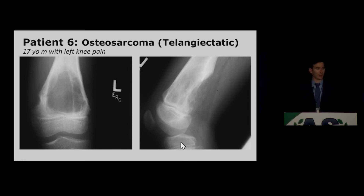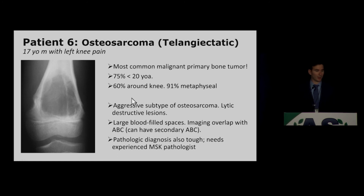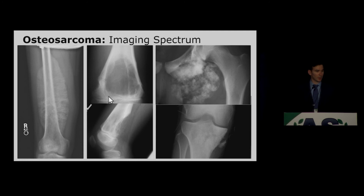Patient 6 is another osteosarcoma — a high-grade telangiectatic osteosarcoma. Similar to high-grade chondrosarcomas, when very high-grade the cells lose the ability to produce new bone formation. These telangiectatic osteosarcomas often lack the bone-forming properties of lower-grade variants. You can see a very shaggy lesion with a wide zone of transition and frank cortical destruction dorsally. A spectrum of osteosarcomas is shown: a bone-forming tumor, one extending from metaphysis into diaphysis with hair-on-end periosteal reaction, and this telangiectatic variant.